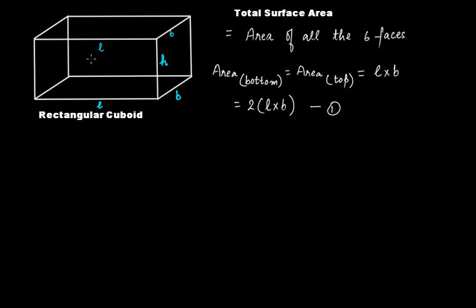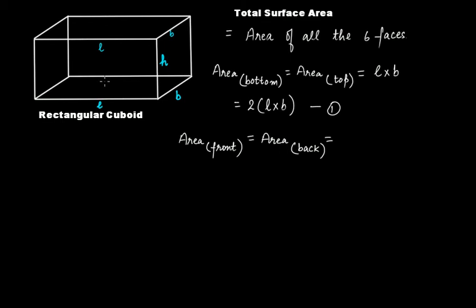If you take the front face and the back face, in the front face rectangle the length is L, and taking H as the breadth of this rectangle, the area of the front face equals the area of the back face, which is length multiplied by height — L × H. So if we add these two together, we get 2 × L × H.